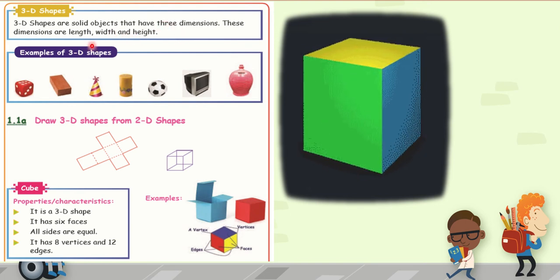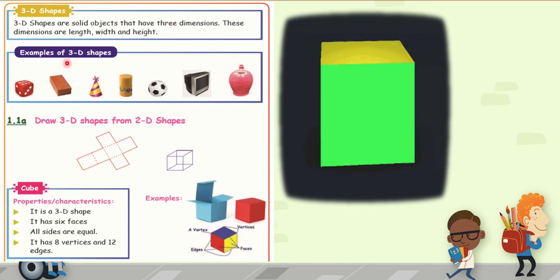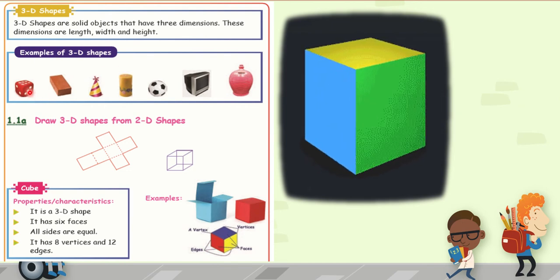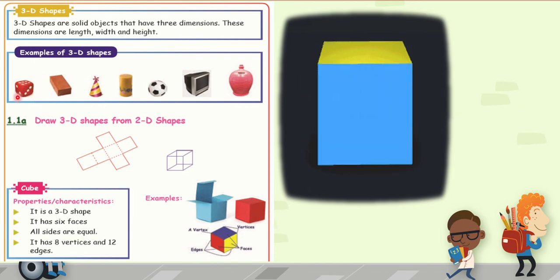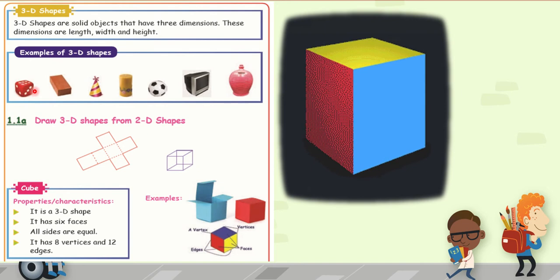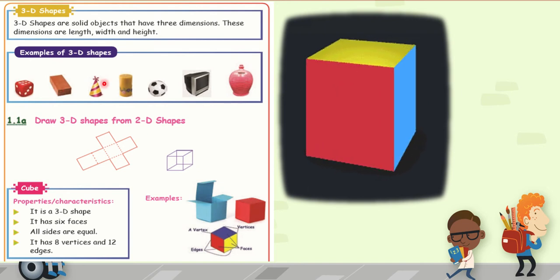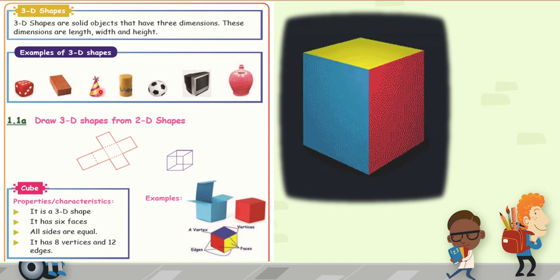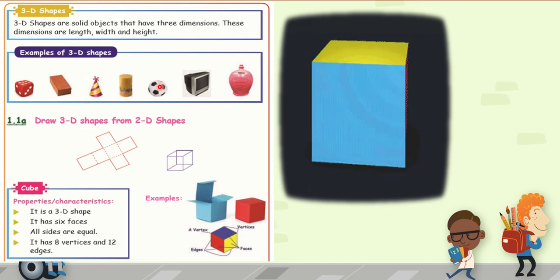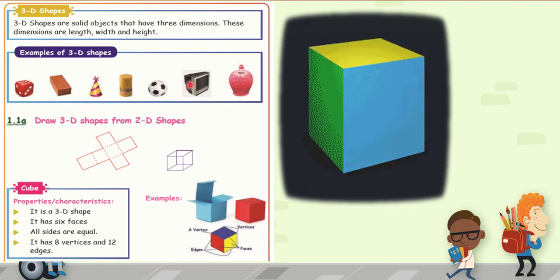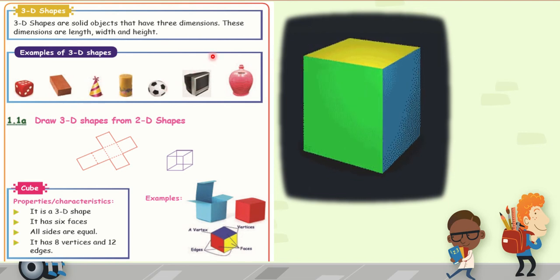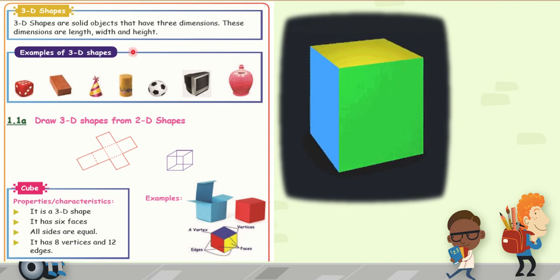Then give an example for 3D shapes: cube, dice, box, birthday cake, birthday cap, candle, football, television. These all are examples for a three-dimensional shape.